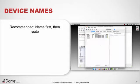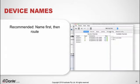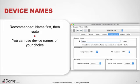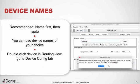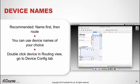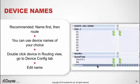Devices and associated channels can be given names of your choosing. It's highly recommended that you name your devices before doing your routing in order to keep things clear. To change a device name, simply click the device name in the routing view, or double-click it in the device view. Click on the Device Config tab, edit the name as you choose, click Apply, and it's done. As you can see, the name is immediately reflected on the device in the routing view.